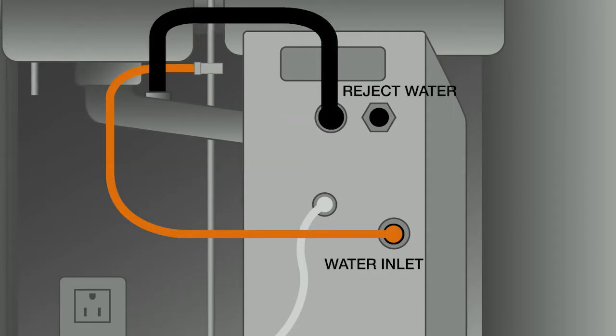Connect the unit's pre-installed reject water hose to the wastewater pipe. Screw the bent end of the feed water hose onto the water purifier and open the shutoff valve on the feed water. Connect the pure water hose from the pure water faucet to the water purifier.